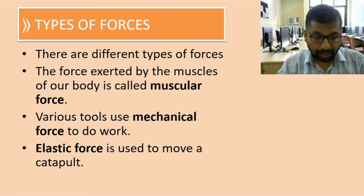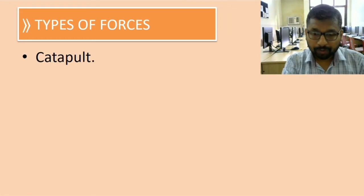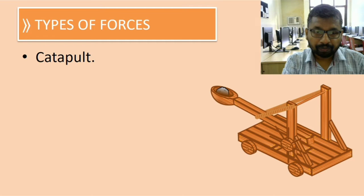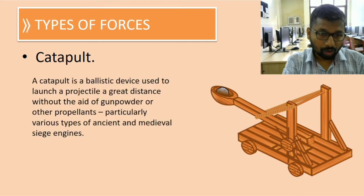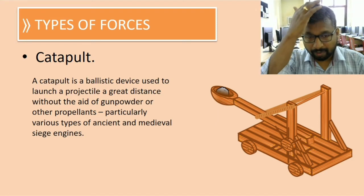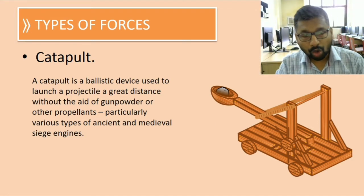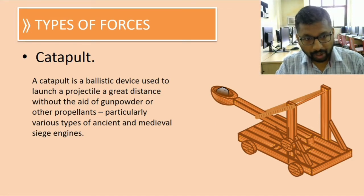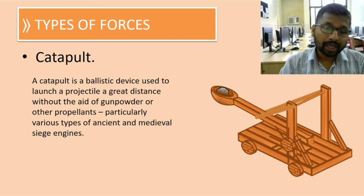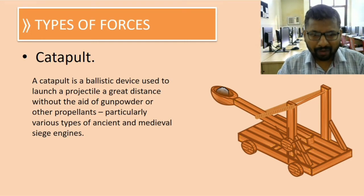Talking about catapult, have you seen this picture? This was an old weapon used during wars. This is called a catapult. It is a ballistic device used to launch a projectile great distances without the aid of gunpowder or any other propellant. Nowadays we use gunpowder propellants, but earlier people used to do it manually with the help of muscular force.